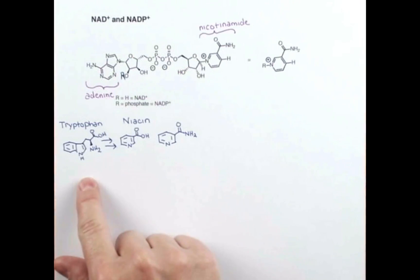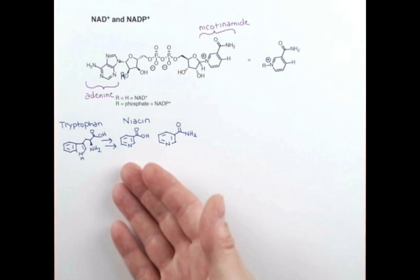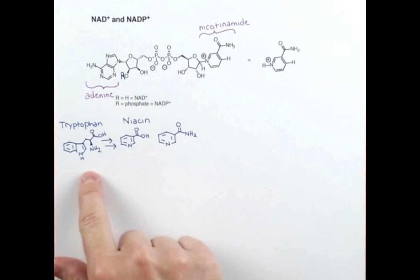Tryptophan is what we call an essential amino acid, which means that humans cannot make it themselves. So if we lack tryptophan, we lack vitamin B3 or niacin, and this can make you really sick.